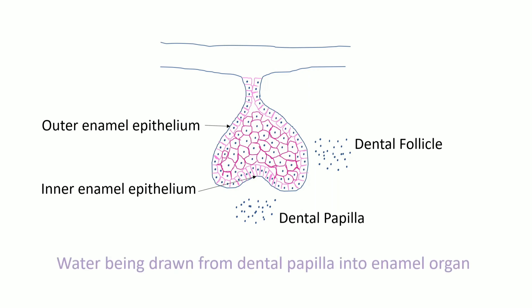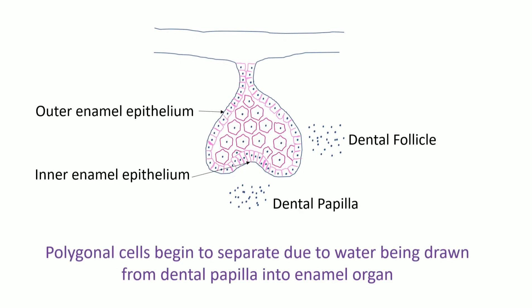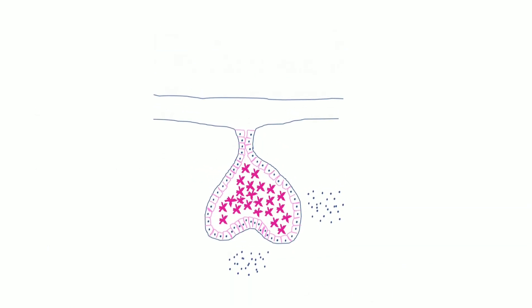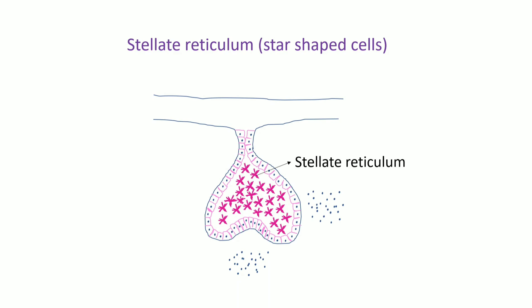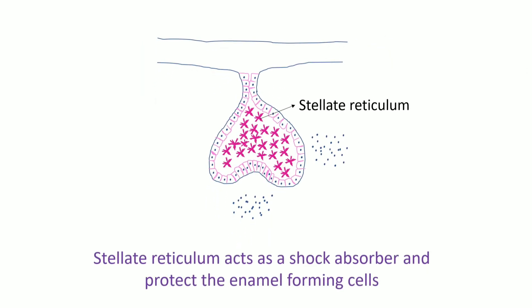Water is drawn from the dental papilla into the enamel organ. As a result, the polygonal cells begin to separate. After that, these cells form a star-shaped stellate reticulum. Stellate reticulum acts as a shock absorber and protects the enamel-forming cells.